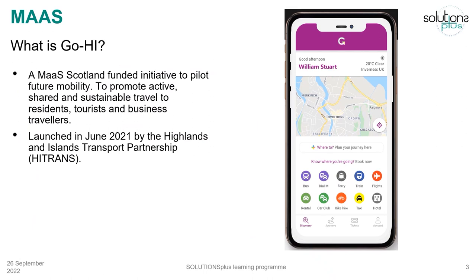Platforms such as GoHi are seen as an evolution in Europe of the concept of mobility as a service, and you are able to use such platforms to access transport information in a personalized way. GoHi is a MaaS Scotland mobility as a service platform launched in June 2021 by the Highlands and Islands Transport Partnership, also known as HITRANS. The aim was to improve accessibility to integrated transport services not only for residents but also for tourists and business travellers within the Scotland Highlands and Islands.